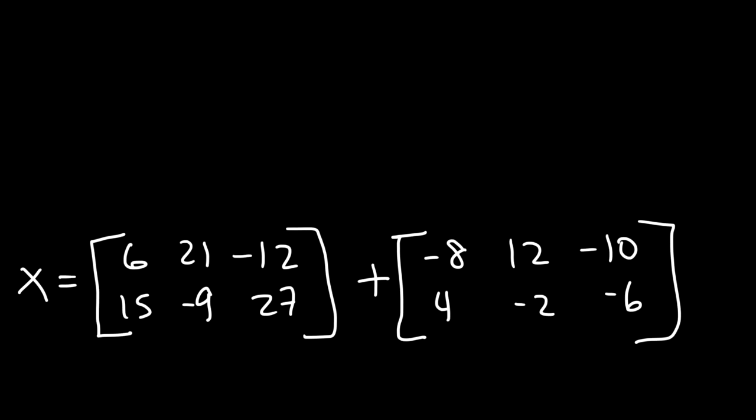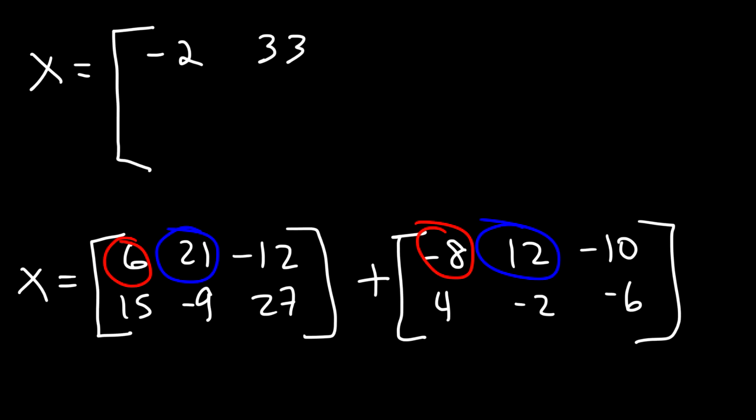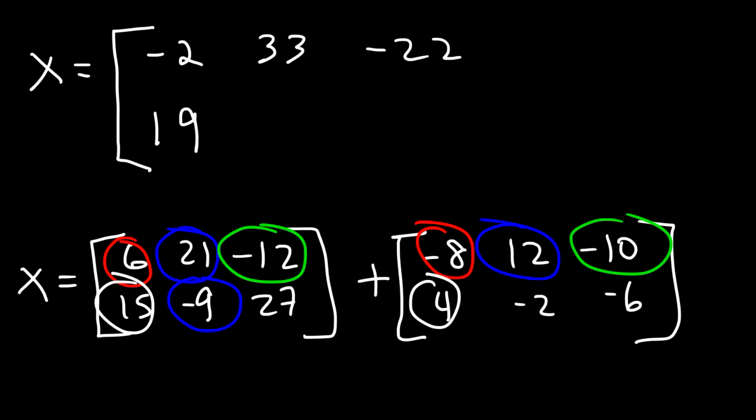Now let's add the two matrices that we now have. So first we have 6 plus -8, which is going to be -2. And then 21 plus 12, that's 33. And then -12 plus -10, that's -22. 15 plus 4 is 19. And -9 plus -2, that's going to be -11. And finally, 27 plus -6 is 21. And that's it.